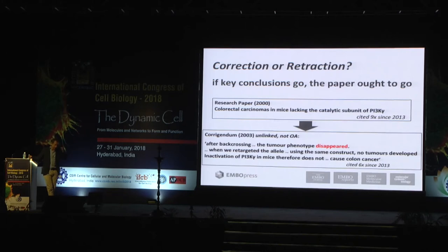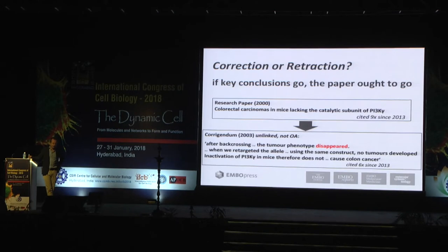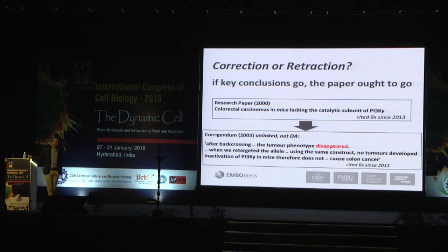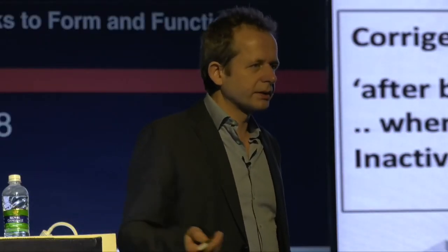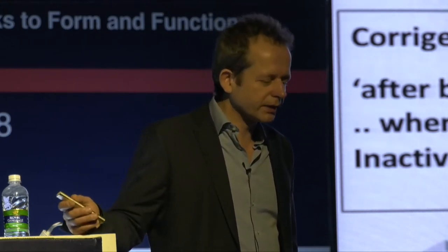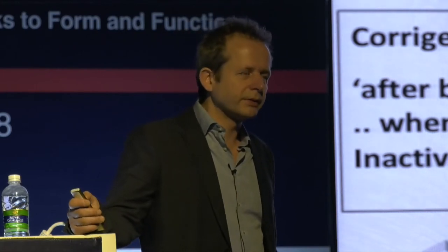If you find that things go wrong in your paper, please act on it. A postdoc colleague of mine, now a director in a famous research institute, published a paper in 2000 in Nature showing that PI3 kinase gamma would cause colorectal carcinomas in the knockout mouse. He found later in 2003 that it was actually an off-target knockout. What he did was publish a corrigendum saying the tumor phenotype disappeared — a two-line corrigendum. The paper is not retracted and continues to be cited to this day. This form of corrigendum is not sufficient to correct the scientific record. It's understandable that off-target effects can happen, but if the central conclusions of a paper fall, you have to act on it and retract the paper.